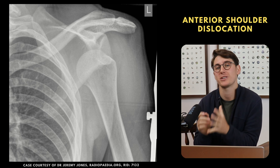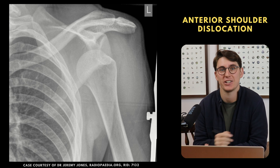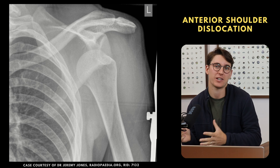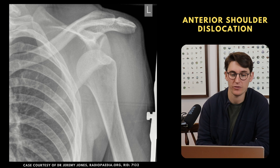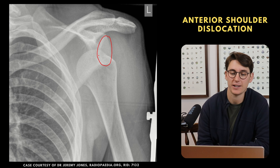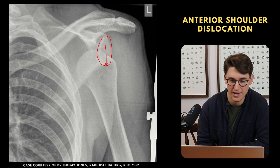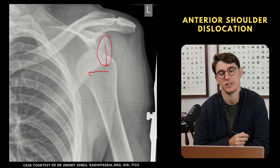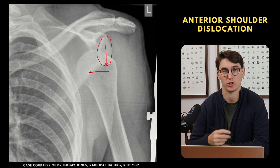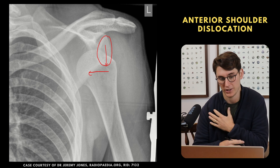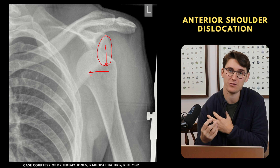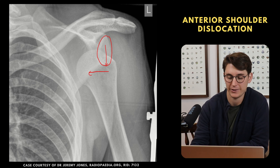Starting with the most common type — anterior shoulder dislocation. Here we have an AP view of the left shoulder. We can see quite clearly that the humeral head is not sitting within the glenoid fossa; it's inferior and anterior to the shoulder joint. This is a classic presentation — the patient comes in drooping their shoulder, holding their arm awkwardly, with the humeral head popped out inferior and anterior to the glenoid fossa.